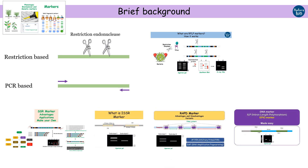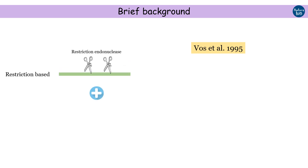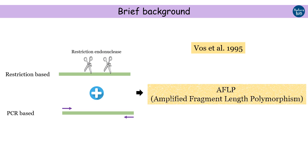You must check out my other marker videos whose link is given in the description below. In 1995, Peter Voss and his colleagues developed a new marker type which is the combination of both the restriction-based as well as the PCR-based method. This marker type was named AFLP, or Amplified Fragment Length Polymorphism.